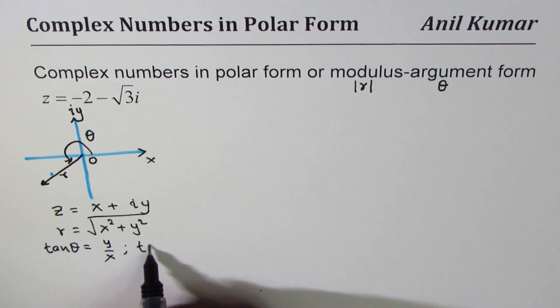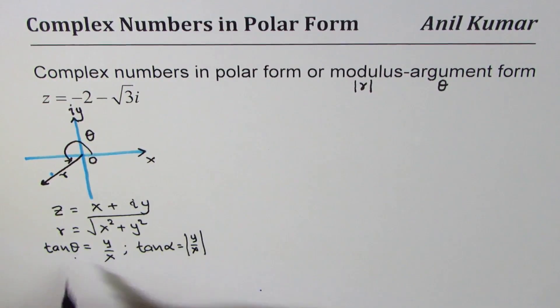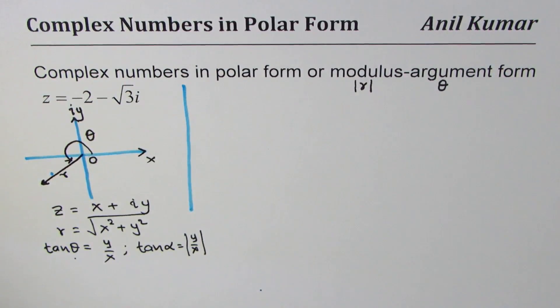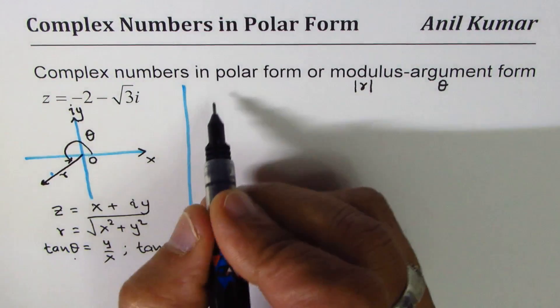Of course with tan θ you have two options, so better thing is first to find acute angle, tan α with positive values of y over x, and then figure out θ.